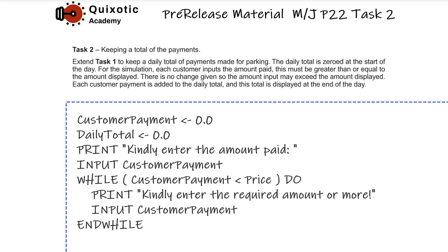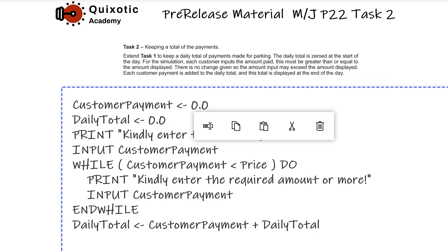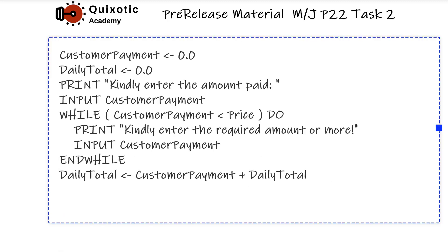We have to validate the customer payment. If it is less than price, we ask again; if it is greater than or equal to price, that's okay. We use a while loop: while customer payment is less than price, print again and take the input again. The while loop stops when the condition customer payment less than price is false, and then the daily total will be updated.